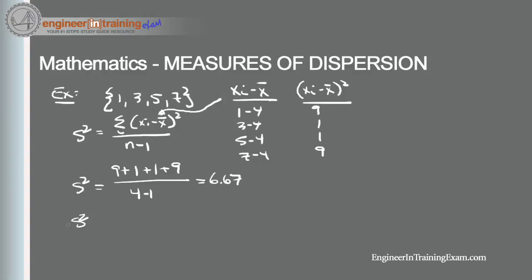The sample standard deviation is simply the square root of the sample variance, which is the square root of 6.67.